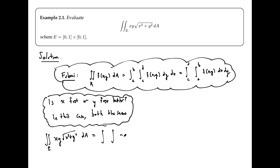Since the order doesn't matter here, we can just pick one variable to integrate first — say x. By Fubini's theorem, integrating with respect to x first gives x bounds from 0 to 1, and then we integrate with respect to y second, also from 0 to 1. This is now an iterated integral, and completing the problem is just a matter of evaluating each single-variable integral from the inside out.